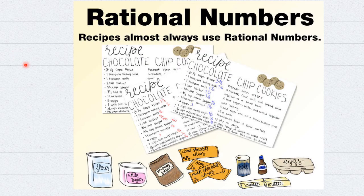We see rational fractions a lot in food recipes — for example, put one cup of sugar and one and a half cups of oil. We see fractions a lot in recipes.